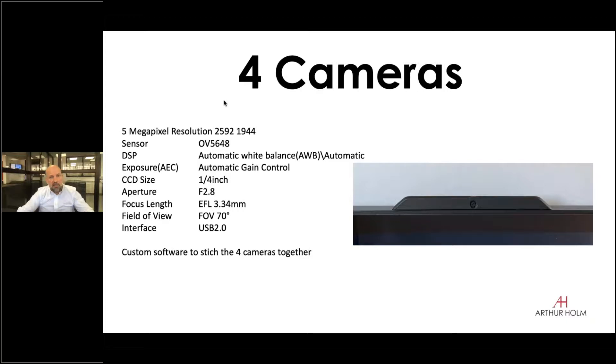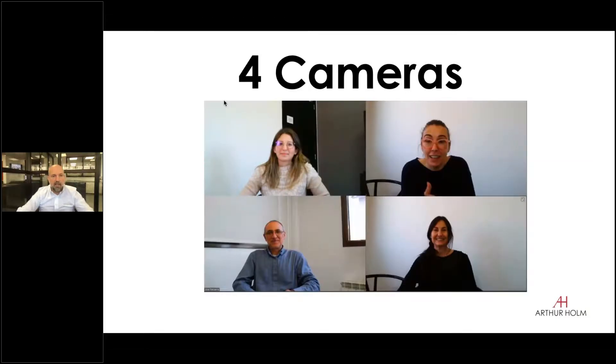Then we have the four cameras, one camera on top of each display. They are five megapixel cameras and they are USB 2 connection. What we do is we take the four different cameras and we stitch together the image so you get on your screen a square with four images. And it looks like this when you are using it for a meeting.